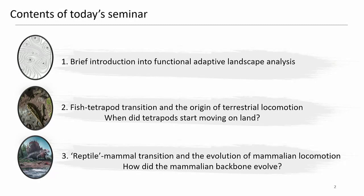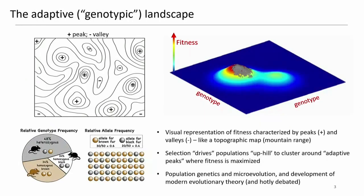In today's seminar we're going to separate it into three parts. The first part will look at the fish-to-tetrapod transition and the origin of terrestrial locomotion. Then we're going to switch gears and look at the reptile-to-mammal transition and the evolution of mammal locomotion. So let's dive right in with our brief introduction.